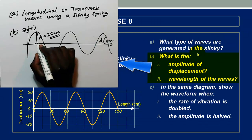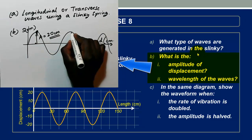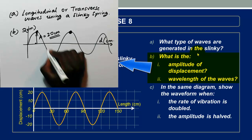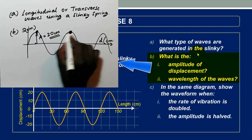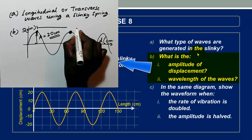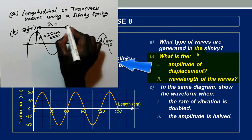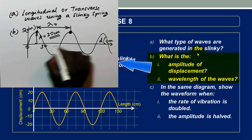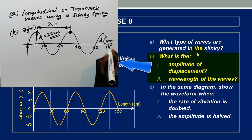In part B2, we are asked to calculate the wavelength of the waves. This is a wave crest, and this is the adjacent wave crest. This complete oscillation — the distance covered by the wave when it makes one complete oscillation — is the wavelength. According to our graph, the positions marked are 0, 30, 60, 90, 120, and 150 centimeters.